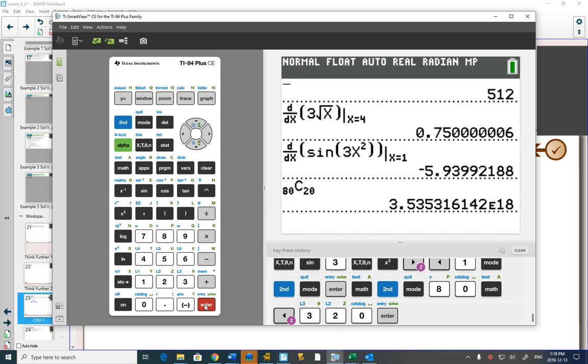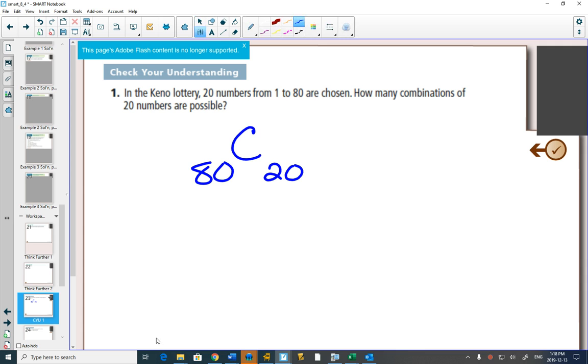And I can write 80 choose 20. And it's some huge number, 3.5 times 10 to the 18.